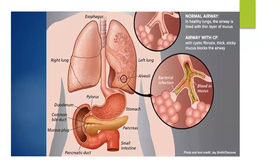This image shows a normal airway on top — clear, open tubes. The airway highlighted in the circle below is compromised by cystic fibrosis, showing a great deal of sticky, thick mucus that can easily block the airway. The sticky fluid can also affect the pancreas, but we will discuss that more in the endocrine unit when we cover diabetes. Right now, because we are in the respiratory unit, we are focusing on how cystic fibrosis affects the lungs.